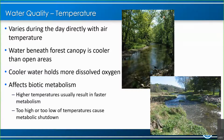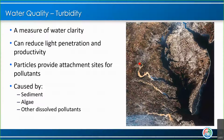Temperature also affects biotic metabolism — aquatic animals can get really stressed out if the water is way too hot. Next up is turbidity, which is a measure of water clarity — or a lack of water clarity. Turbidity is caused by suspended sediment, algae, or other dissolved pollutants. With suspended solids in our streams, it can reduce the light penetration that reaches the streams, therefore reducing productivity within the stream.